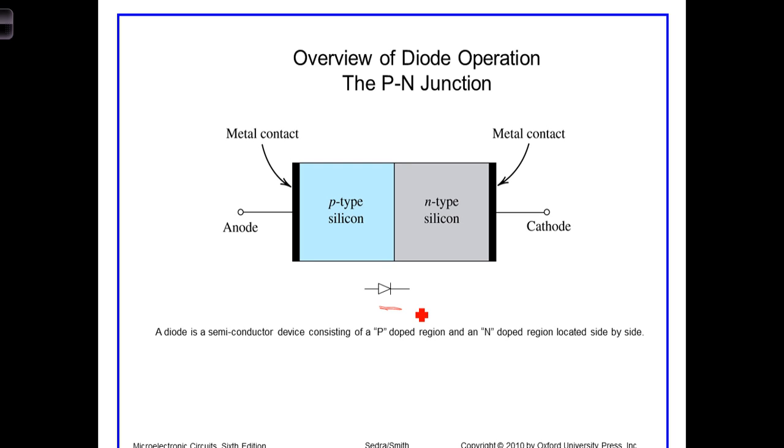Classical current, meaning positive charge current, enters the device through the anode and leaves through the cathode. Electrons enter through the cathode and leave through the anode.